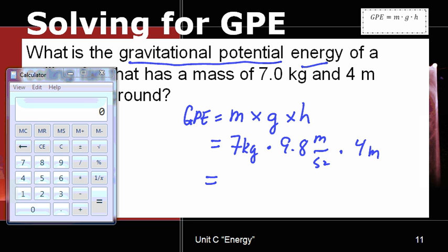On our calculator, we'll type in our values: 7 kilograms times 9.8 times 4 meters. And we find the value to be 274.4.